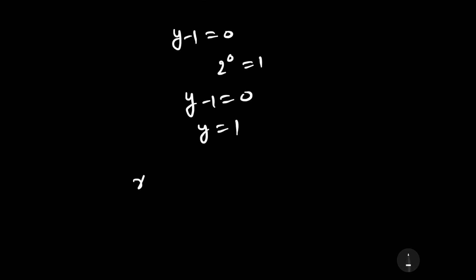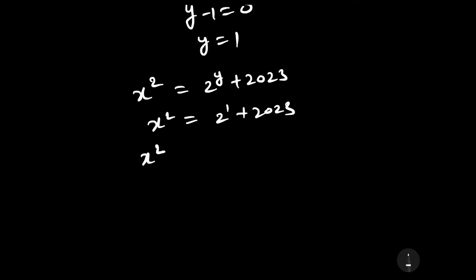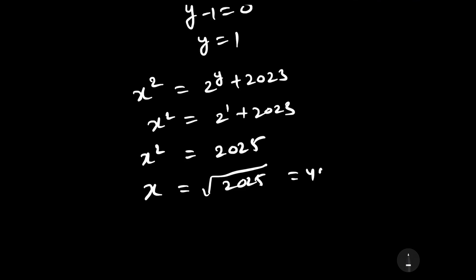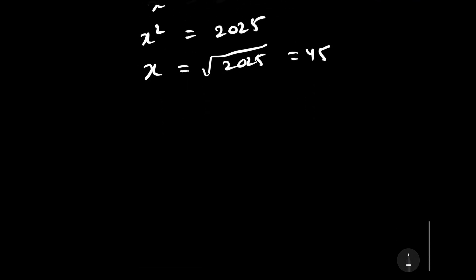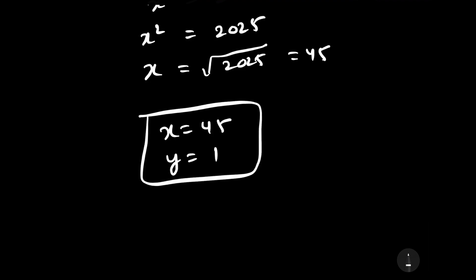Putting y = 1 into the original equation: x² = 2¹ + 2023 = 2 + 2023 = 2025. Taking the square root of 2025 gives x = 45. Therefore, the value of x is 45 and the value of y is 1 — this is our required answer.